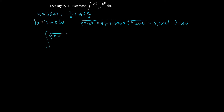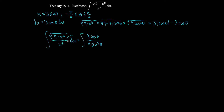The integral of √(9 − x²) / x² dx becomes 3 cosine theta over 9 sine squared theta, times dx which is 3 cosine theta dθ. You might think we made it worse, but actually we made it much better — the 9's cancel and we have cosine squared over sine squared, which is just cotangent squared.